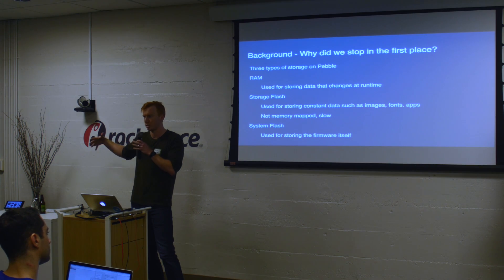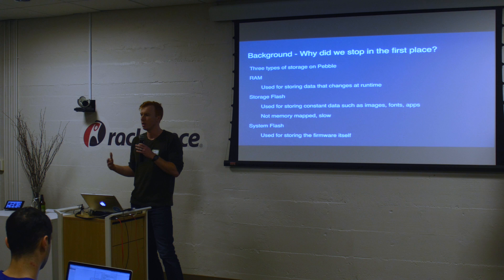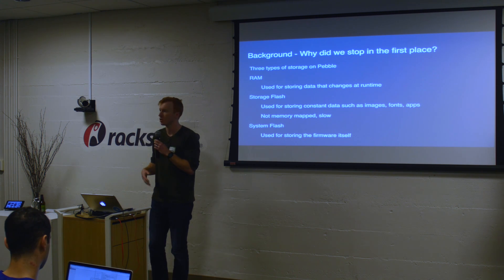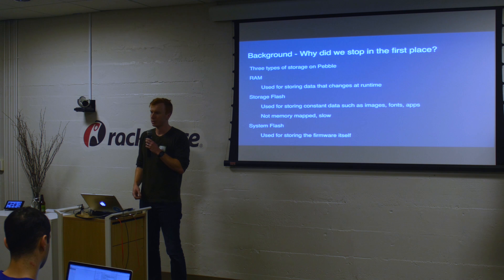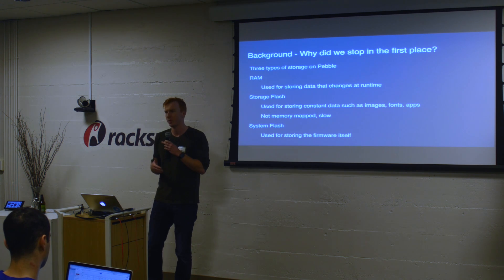There are three different types of storage on Pebble. There's RAM — just like on your computer — used for storing data you manipulate while the watch is running. There's storage flash: a big, slow chip hanging off the side of the board that we use for storing fonts, images, and static display data — very large but slow. And then the part we'll talk about most is the system flash: a piece of flash memory stored right in the microcontroller itself that actually stores the firmware. Whenever we ship a firmware update, compile it into a blob and ship it to you, that's where it gets installed and where it runs from.